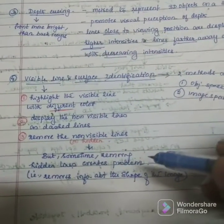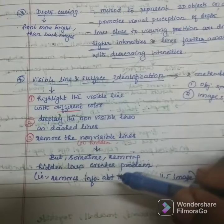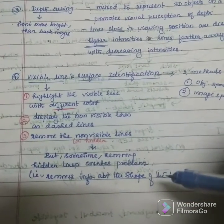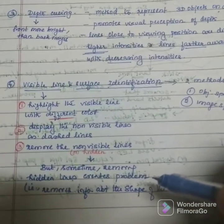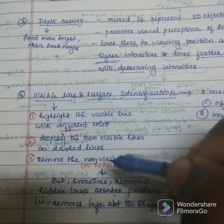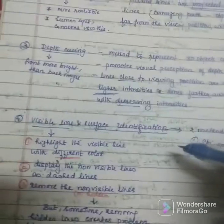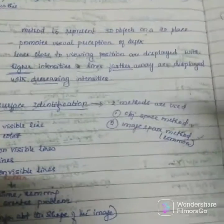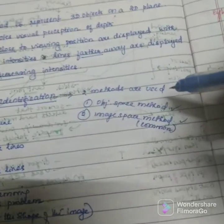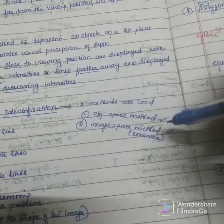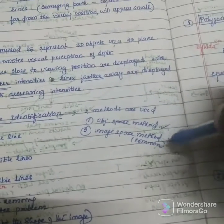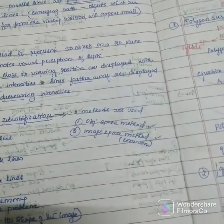But sometimes the remaining hidden lines create a problem. Usually we follow these three cases. For surface identification, two methods are used: object space method and image space method, and the second one is more common.